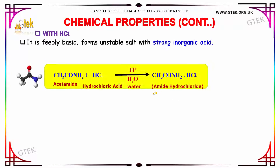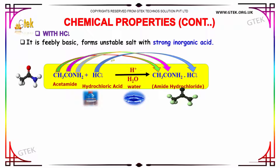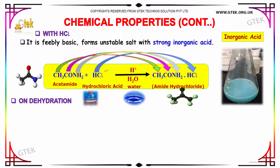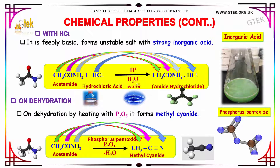With hydrochloric acid, amides form an unstable salt with strong organic or inorganic acids. When acetamide reacts with hydrochloric acid in the presence of water, it produces amide hydrochloride. On dehydration — on heating with P2O5 — it forms methyl cyanide, that is CH3C triple bond N.